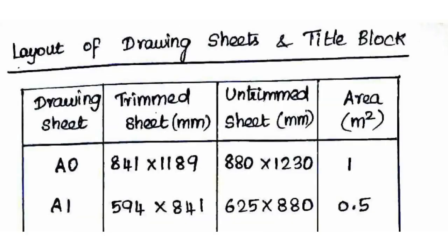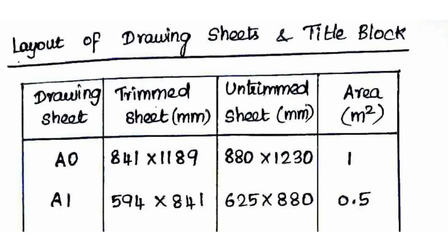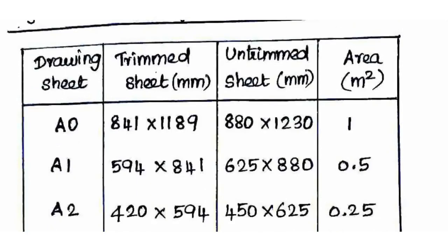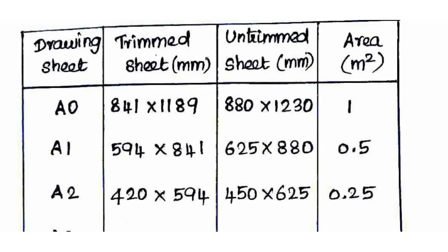The next topic is the layout of drawing sheets and title block. Let's look at the dimensions and area of the drawing sheet. The drawing sheet sizes are A0, A1, A2, A3, and A4. The area of the A0 sheet is approximately 0.99 m², which is approximately equal to 1 m².